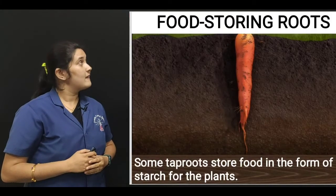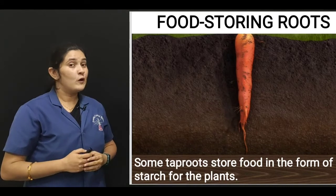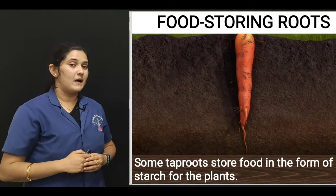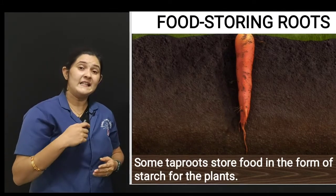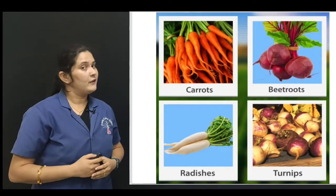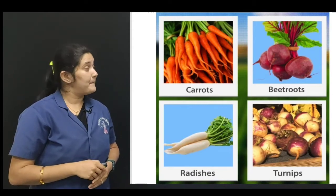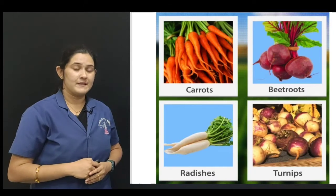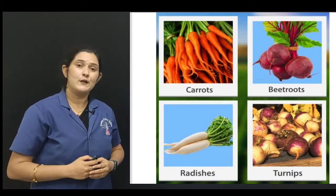The first special type is food storing roots. Some tap roots store food in the form of starch for the plant. These are edible roots — we can eat them. Here in the picture you can observe the roots of carrots, beetroots, radishes, and turnips. These are examples of food storing roots.